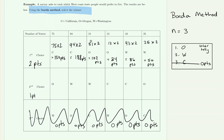For Oregon's first place votes: the first group of 51 people accounts for 102 points, and 12 people who also ranked Oregon first contribute 24 points. For Washington's first place votes: one group gives 86 points and another gives 50 points. Every second-choice vote counts for one point.